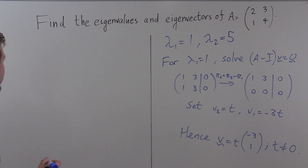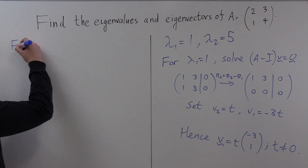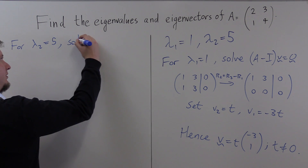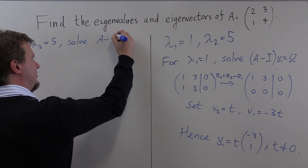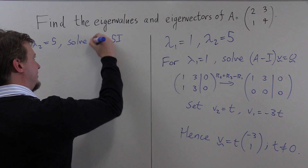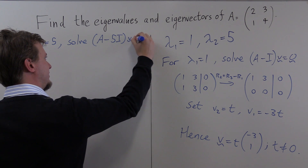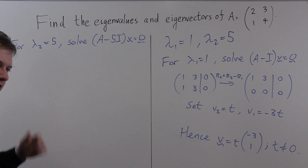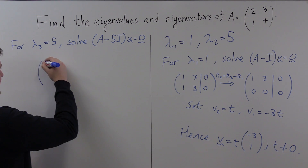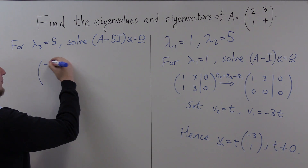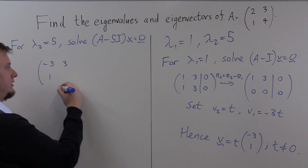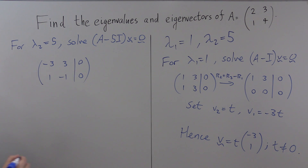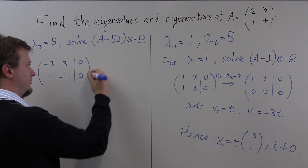Now let's find our second eigenvector. For lambda₂ equal to 5, we solve the equation (A minus 5I) times our vector equals zero. As an augmented matrix, this is the matrix −3, 3, 1, −1, augmented with 0, 0. This is quite easy to solve.